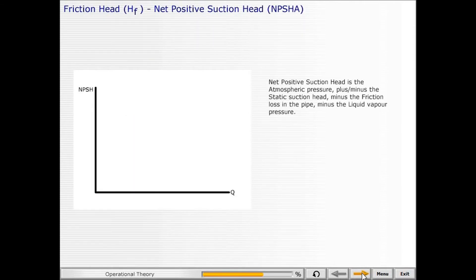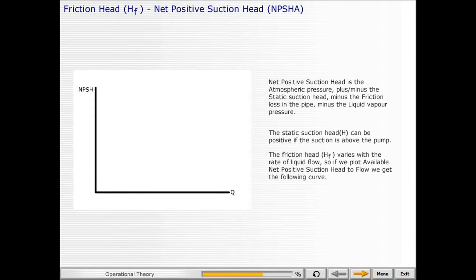Net positive suction head is the atmospheric pressure, plus or minus the static suction head, minus the friction loss in the pipe, minus the liquid vapor pressure. The static suction head can be positive if the suction is above the pump. The friction head varies with the rate of liquid flow, so if we plot available net positive suction head to flow, we get the following curve.